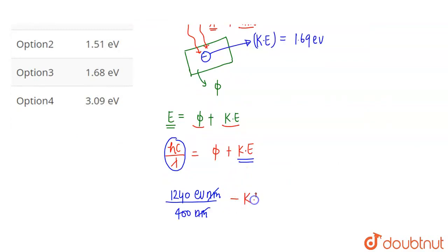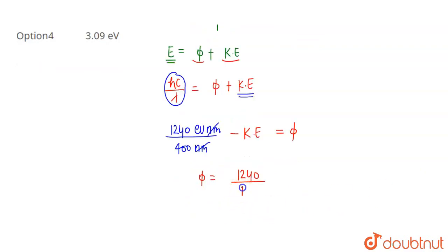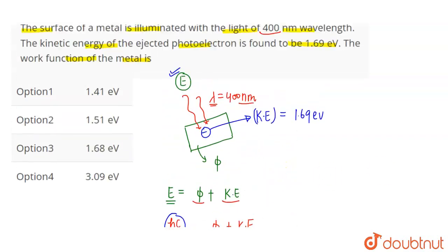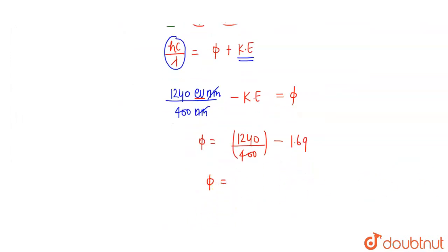The incident energy E equals phi plus kinetic energy. So phi equals 1240 divided by 400 minus the kinetic energy, which gives us phi equals 3.1 minus 1.69 electron volts.